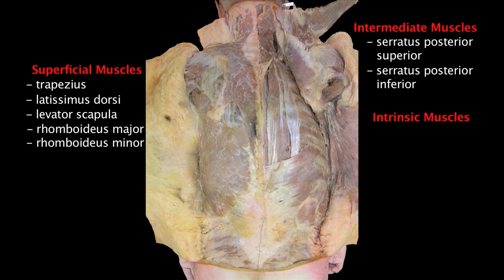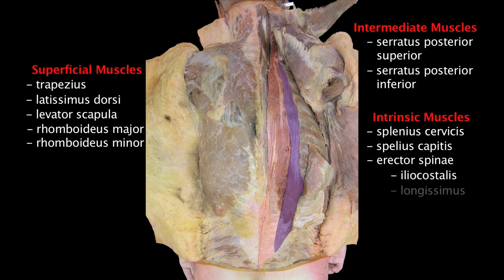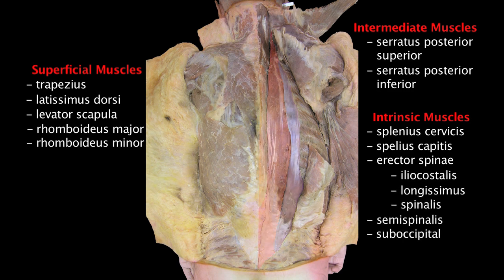In the deep muscle layer, containing the splenius cervicis and capitis, as well as the erector spinae muscles — which include the iliocostalis, the longissimus, and spinalis — as well as the semispinalis and suboccipital muscles that lie deep to those, predominantly control the extension and rotation of the head and vertebral column.